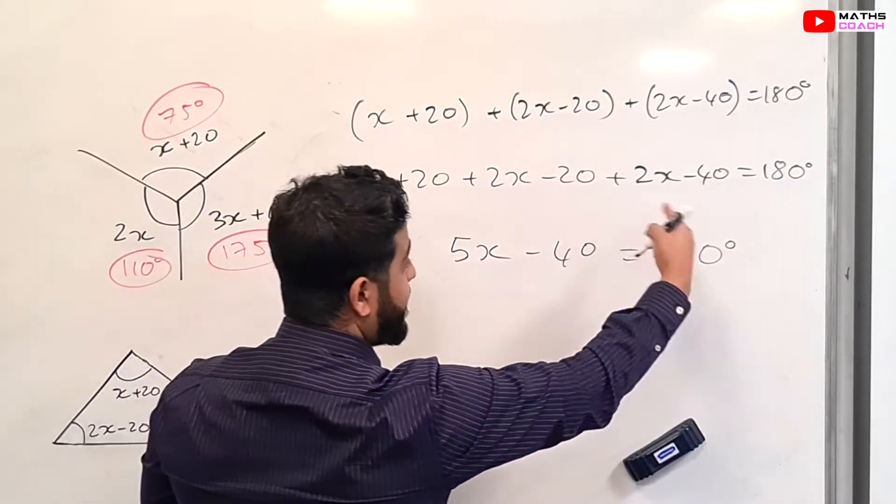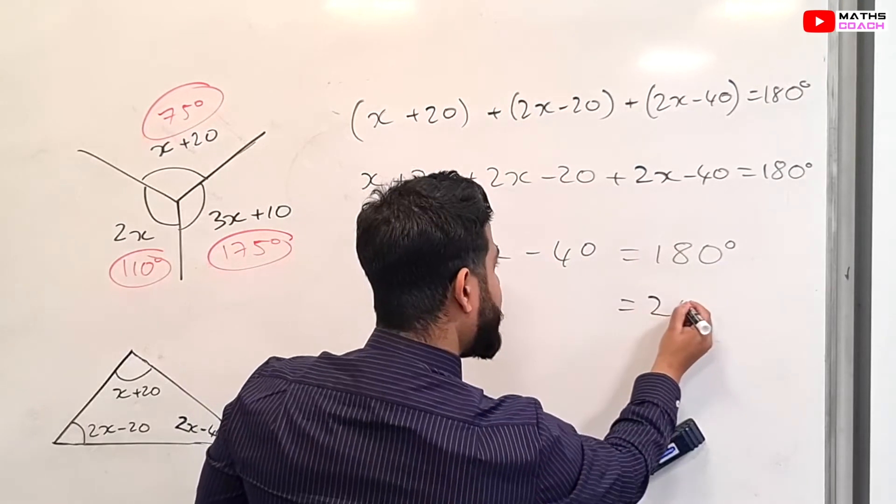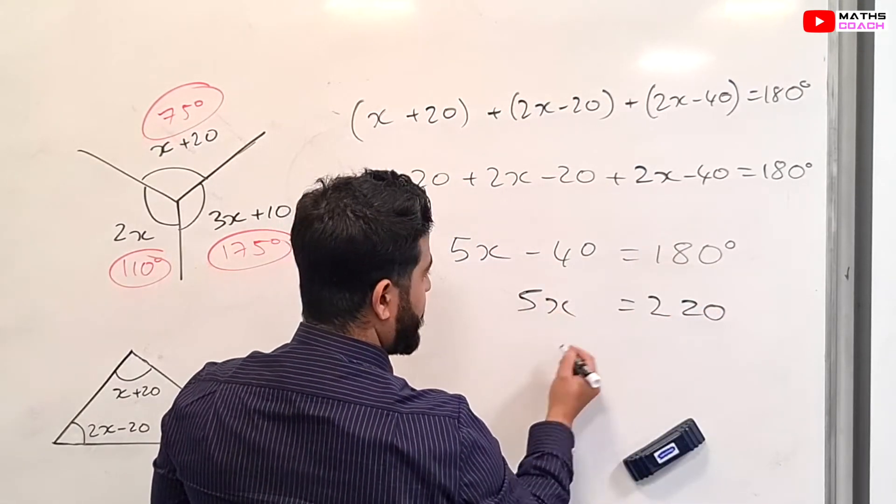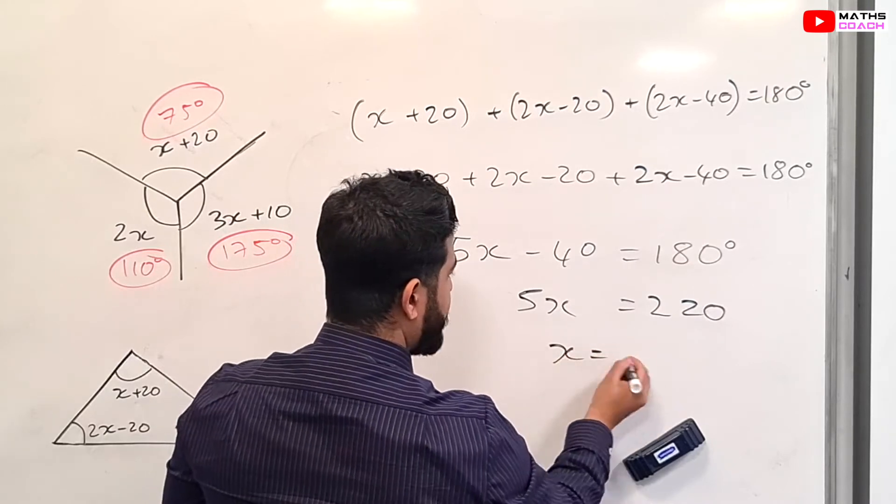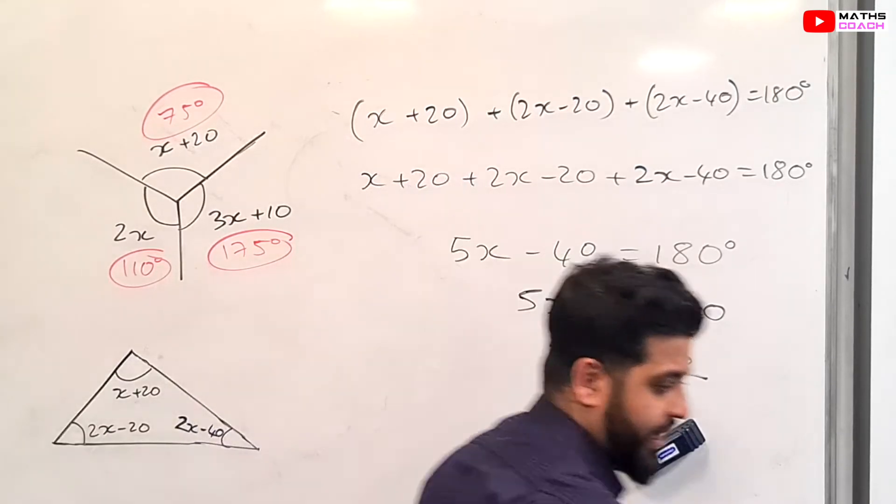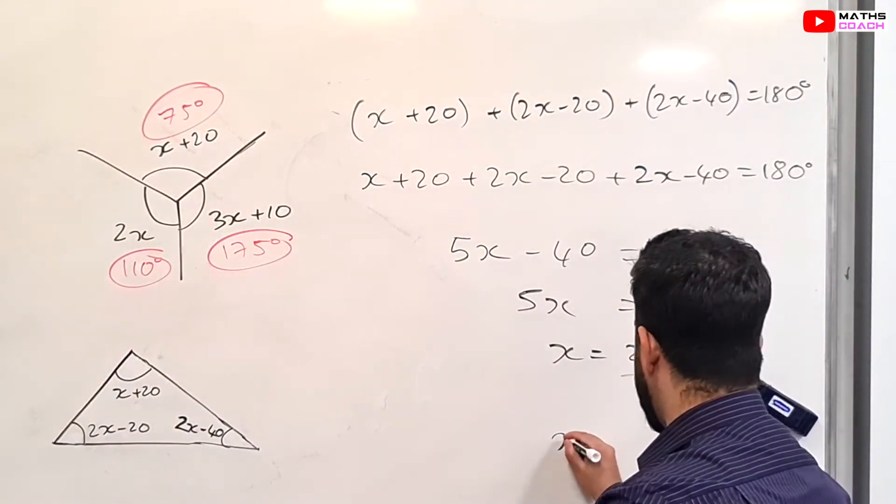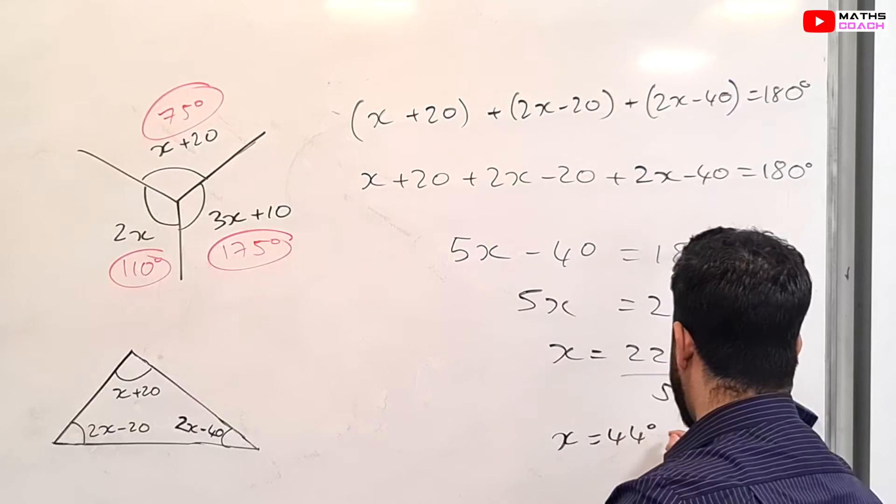We'll just solve this now. Take the minus 40 to this side, so we get 220. So 5X equals 220. Therefore X equals 220 over 5, which is 44 degrees.